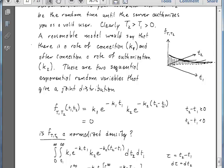So whatever T1 comes out to be, there's going to be some additional time, T2 minus T1, as the T2 is the time of authorization, and that decays with a rate k2. So we've got these two exponential distributions here.